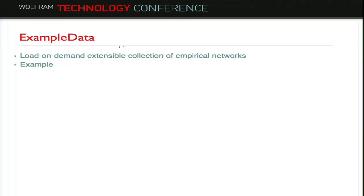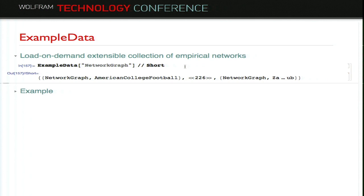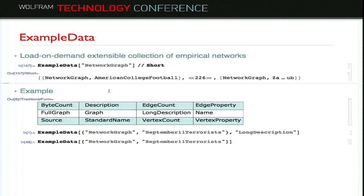Another way to get data is using the example data. We load an on-demand extended collection of empirical networks in Mathematica. You can see the list of empirical graph networks supported — about 228 right now, and we're going to keep adding more. Most of the data is commonly used. Each example dataset supports properties like graph size, description, edge count, edge properties, and so on.